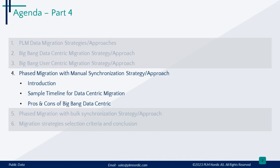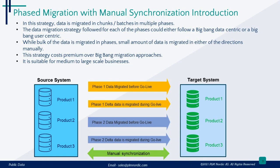In the phased migration with manual synchronization strategy, we'll explore a typical migration timeline derived from the sample data considered for the previous videos. In this strategy, data is migrated in chunks or batches in various phases. The data migration strategy followed for each phase could either follow a Big Bang data-centric or a Big Bang user-centric approach. In essence, it is a strategy formed by stitching multiple Big Bang approaches together.